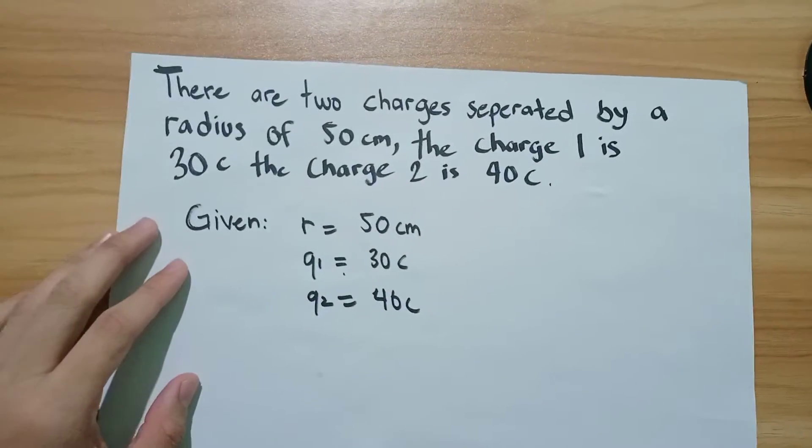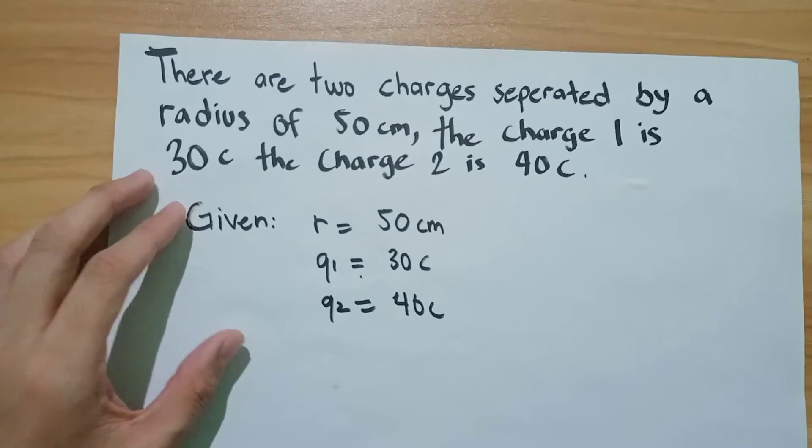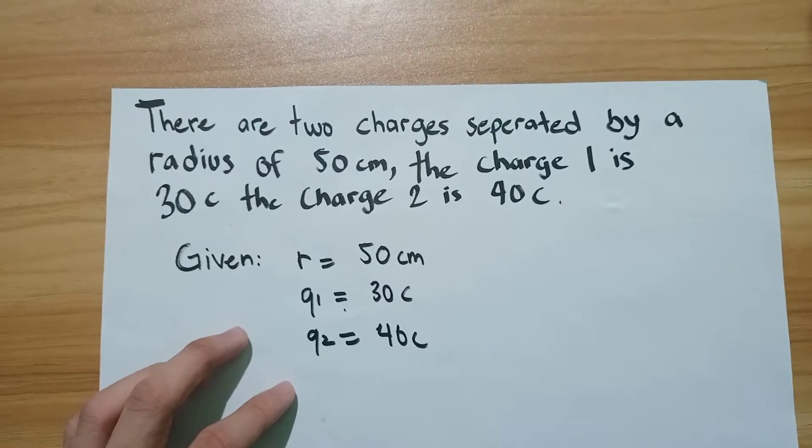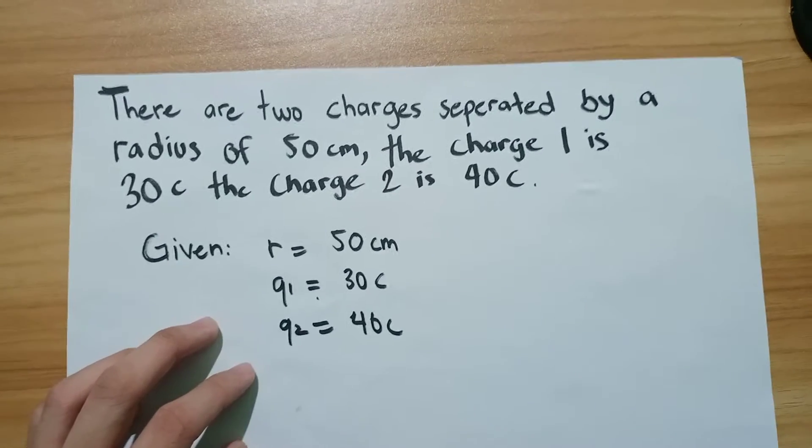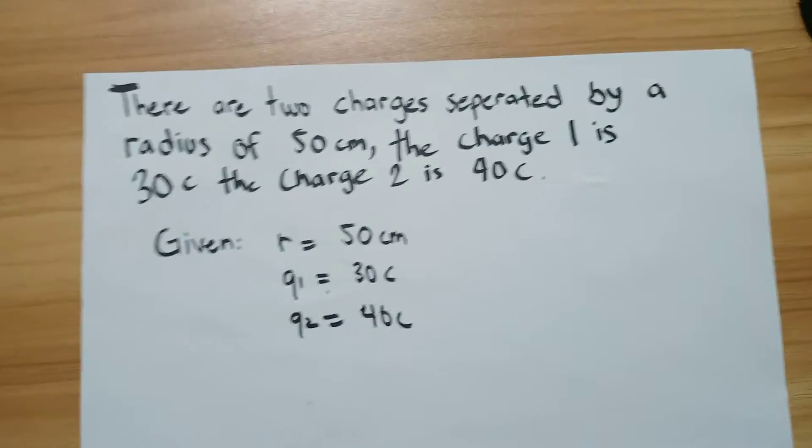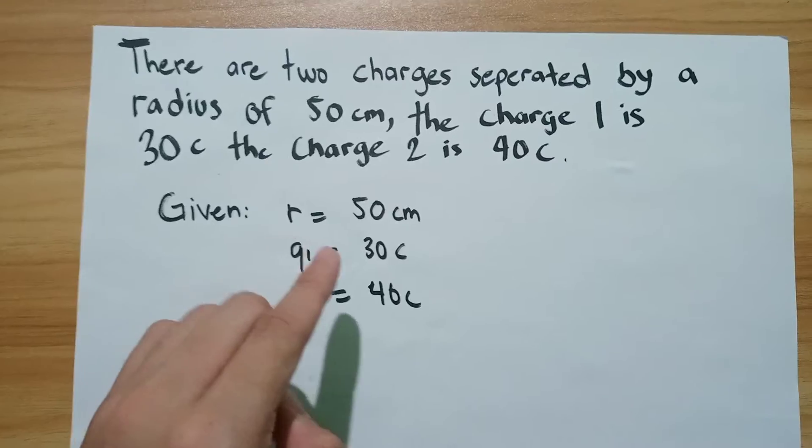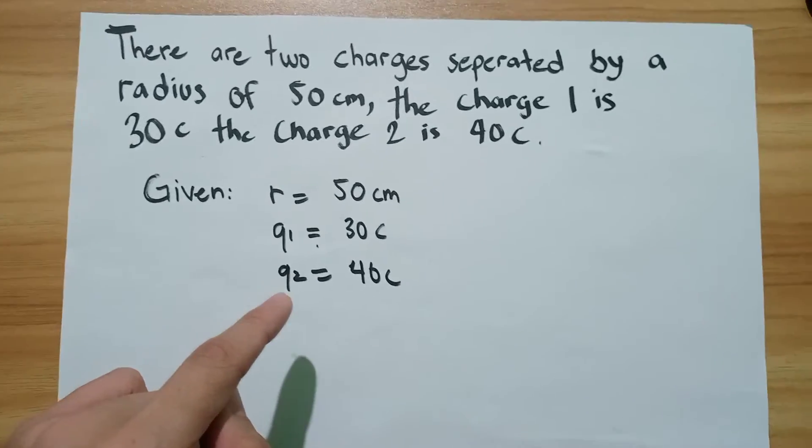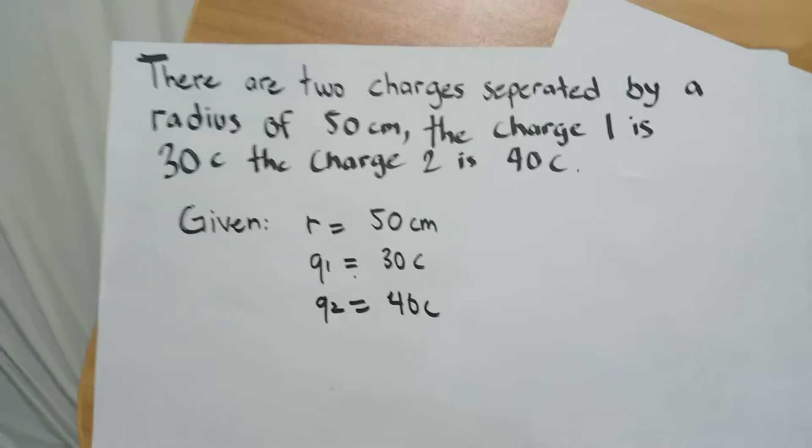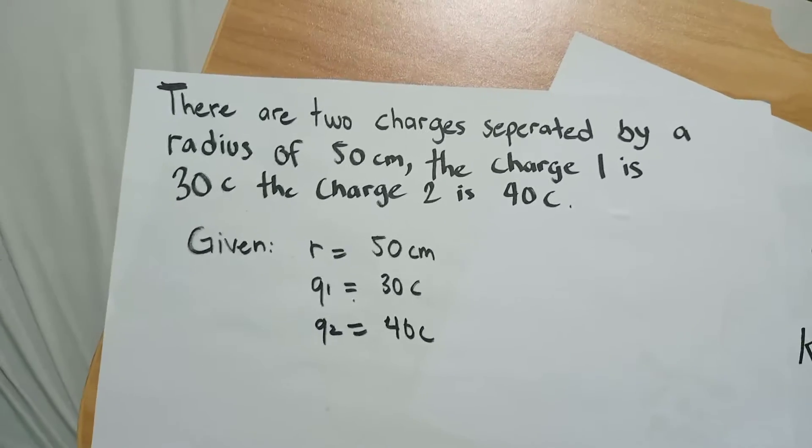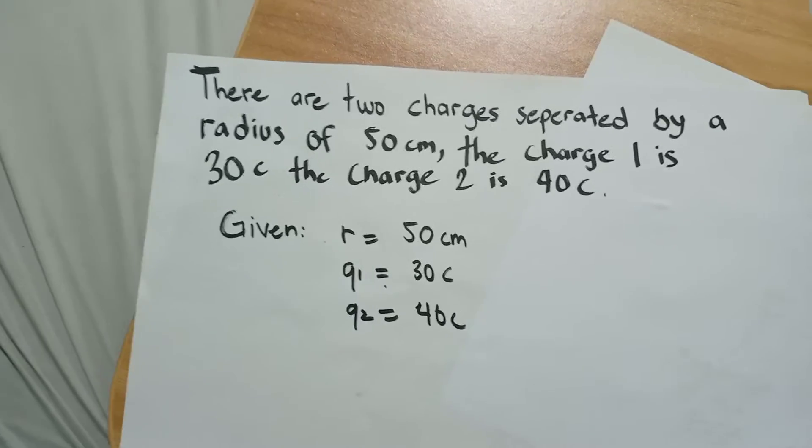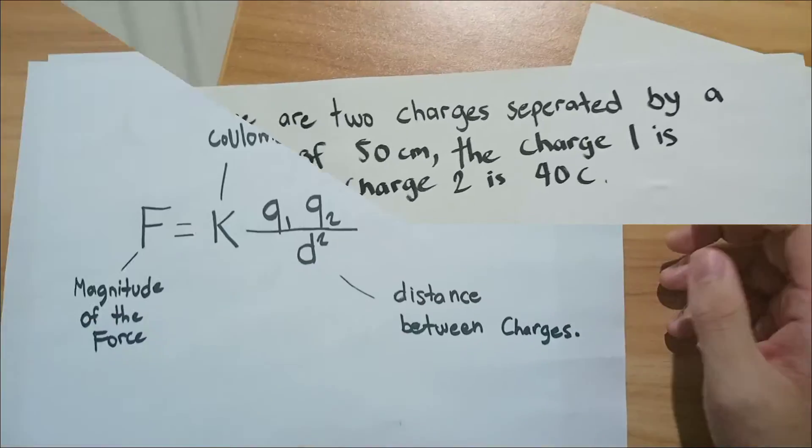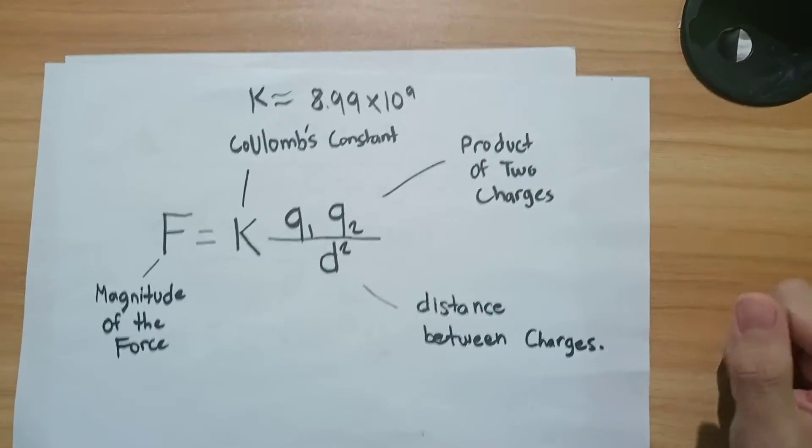Now this is the example problem. There are two charges separated by a radius of 50 cm. The first charge is 30C while the second charge is 40C. The given are: radius 50 cm, first charge 30C, and second charge 40C. Now we are going to use the formula of Coulomb's law.